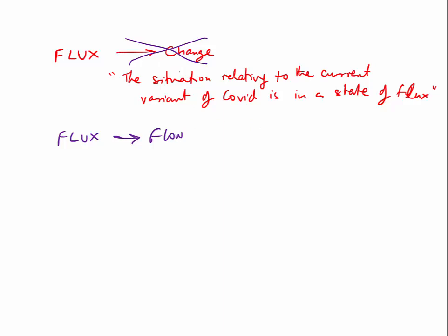The way we use it in common language where it denotes change, if you think about it, it's also talking about the fact that things are flowing pretty fast and that is why they're changing. The situation is in a state of flow — it's not static, which is why it is changing. So please get it out of your mind that flux means change. Flux is flow.